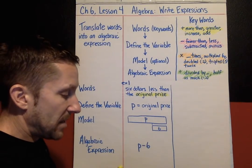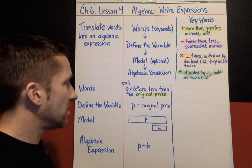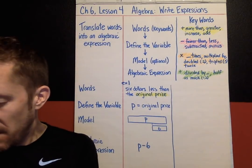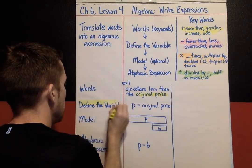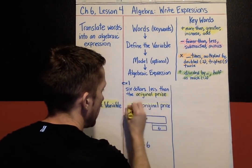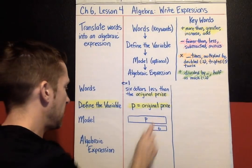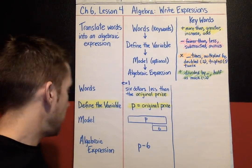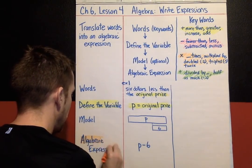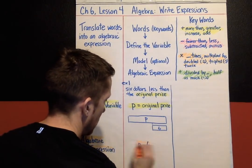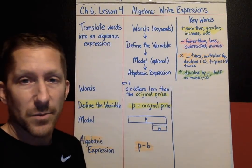These are the two big things you're going to be doing today. Your book and practice give you the words; you are going to define the variable — writing down what letter you chose and what it represents, like 'the original price.' The model is optional, and you are going to come up with the algebraic expression, translating words into an algebraic expression.